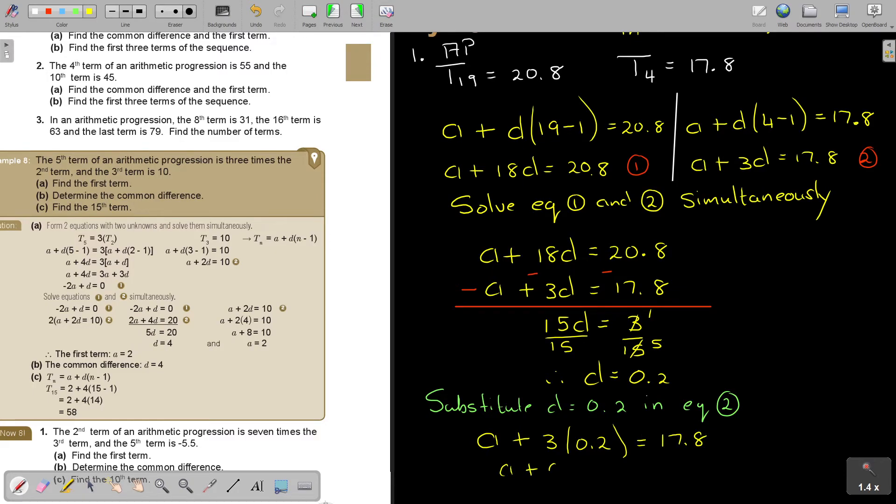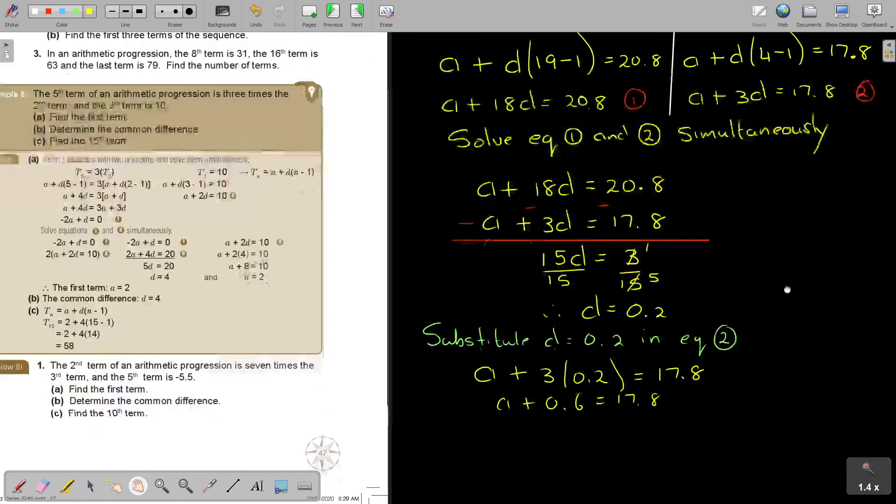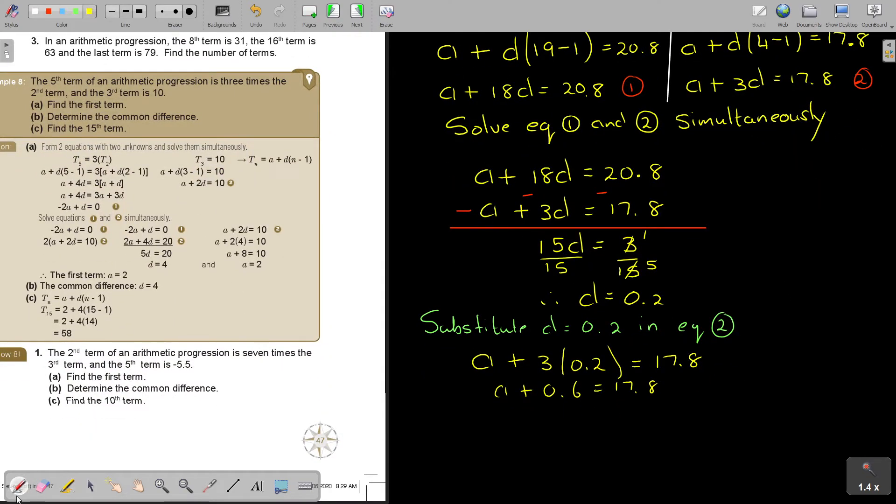So A plus 0.6 is 17.8. And that is 17.8 minus 0.6. And the value of A will be 17.2.